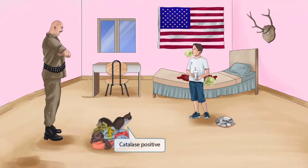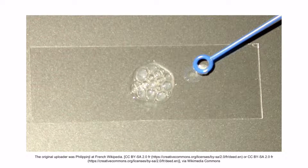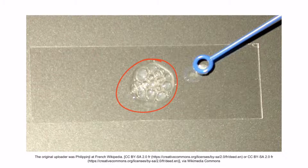Remember the dirty pile of clothes on the ground? The family's pet cat seems to enjoy this cozy spot, so you can see that the cat is sitting on the pile of clothes. Just like in our other images, the cat is here to help you remember that H. pylori is catalase positive. The bubbles in the catalase test indicate that the organism is catalase positive.